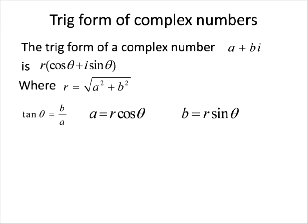If you happen to have a complex number — the regular old A plus Bi kind of thing — we're going to rewrite those into trig form, which is going to be R times cosine theta plus I sine theta. The things you have to remember are: R squared equals A squared plus B squared, tangent of theta equals B over A, A is our R cosine theta, and B is our R sine theta.